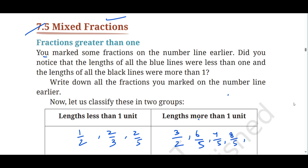Earlier in Exercise 7.4, we marked some fractions on the number line. Did you notice that the lengths of all the blue lines were less than 1 and the lengths of all the black lines were more than 1? Now let us classify these fractions into groups — those less than 1 and those more than 1.